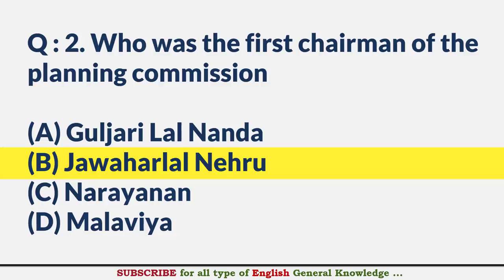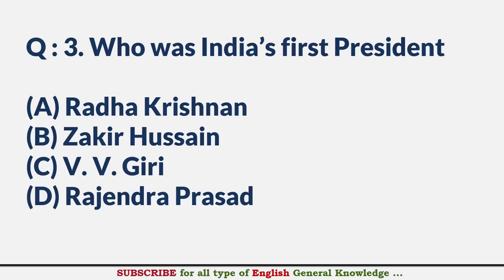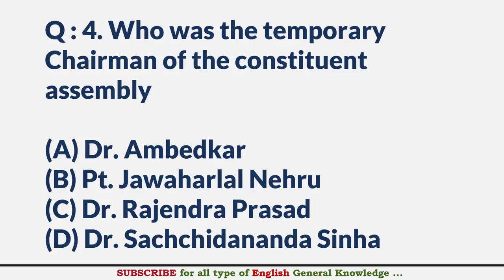Who was India's first president? — Answer D: Rajendra Prasad. Who was the temporary chairman of the Constituent Assembly? — Answer D: Dr. Satchidanand Sinha.